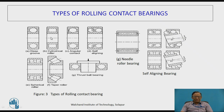Here is a cylindrical roller bearing in which there is a line contact, and as the contact area is more, the load carrying capacity is high. So these are basically used for heavy radial loads acting on the bearing.